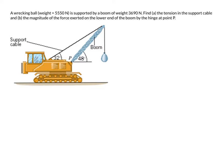Here we're told we have a wrecking ball that has a weight of 5,550 newtons that's been supported by a boom, which is this unit here, this object here, and the boom has a weight of 3,690 newtons.